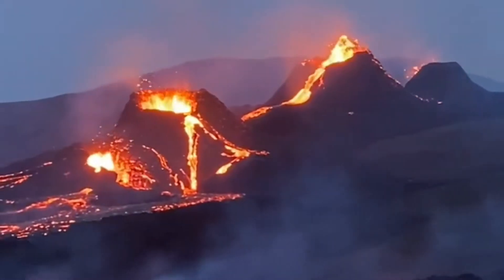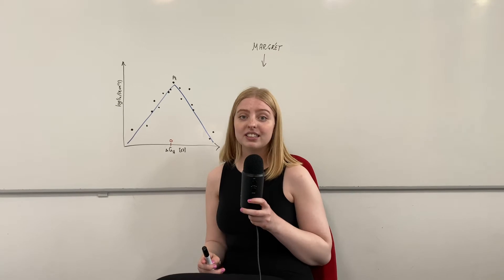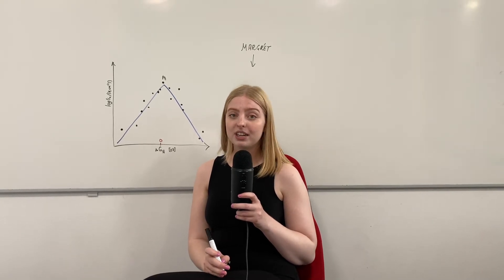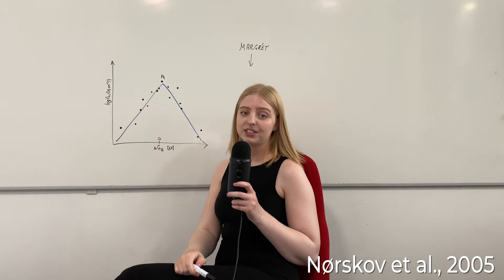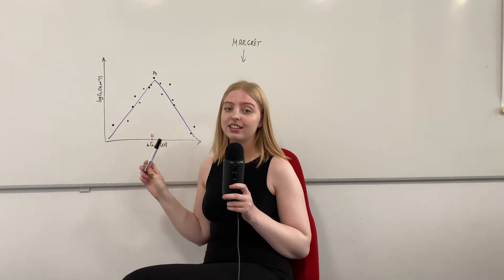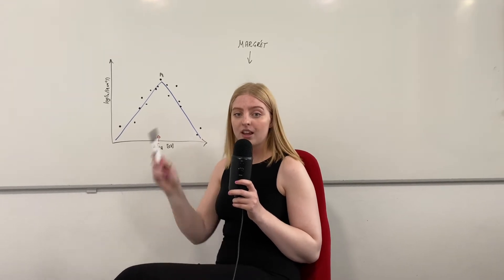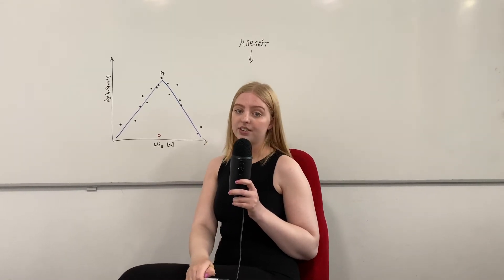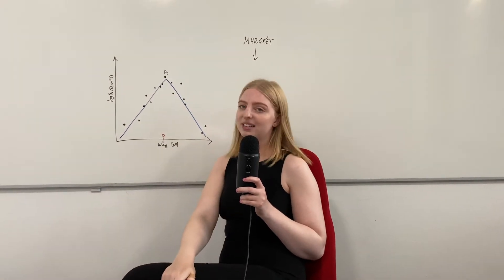Now let's talk about volcanoes. This is me at the Fagradalsfjall eruption in Iceland, where I traveled to study the ins and outs of volcano plots next to a real active volcano. Not only are volcanoes cool, but they are a great representation of the Sabatier principle. Volcano plots are a way to visualize the effectiveness of different catalysts by plotting adsorption energy versus the rates of the catalysts, and they are named so because they take the form of volcanoes. On the left side of the volcano's peak, the activity decreases with decreasing integral adsorption energy, or ΔEH, because there are fewer and fewer available sites for hydrogen recombination at the surface, and the hydrogen bonds too strongly. On the right side, the opposite happens — hydrogen becomes more unstable with increasing ΔEH, and activity decreases. Here, hydrogen bonds too weakly. The metals or metal alloys placed near the top of the volcano are the best catalysts.